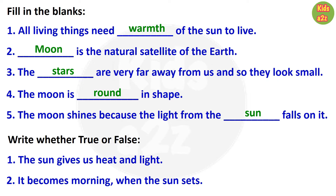For the next question, kids need to write true or false beside each statement. Statement 1: The sun gives us heat and light — True. Statement 2: It becomes morning when the sun sets — False.